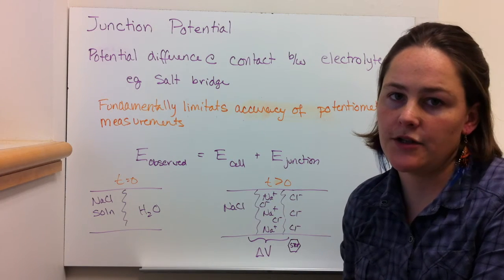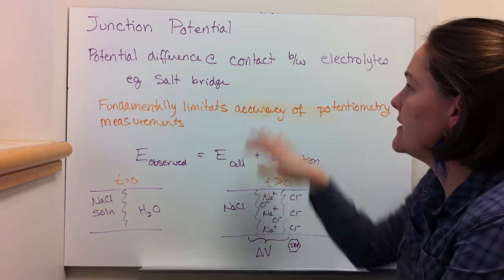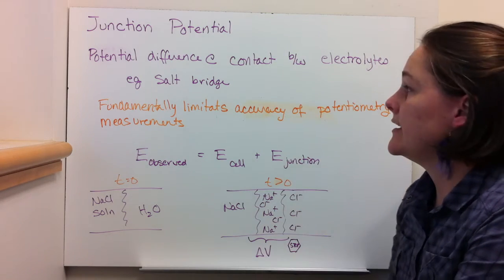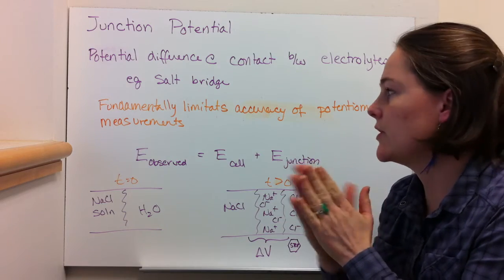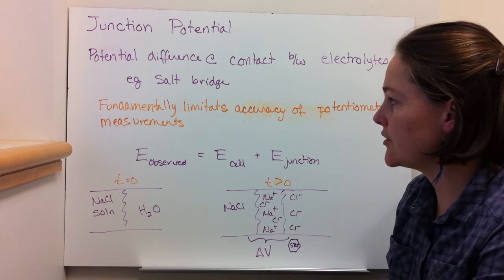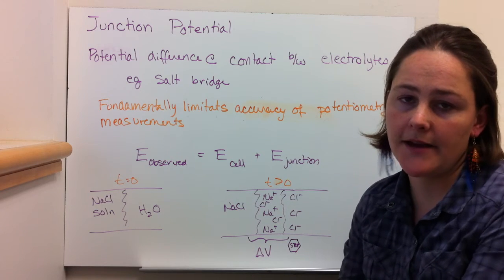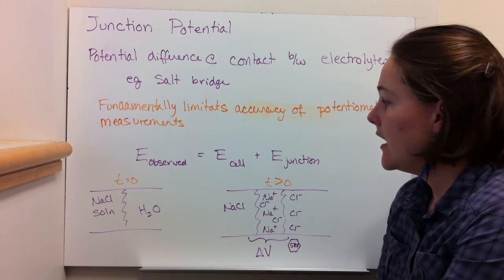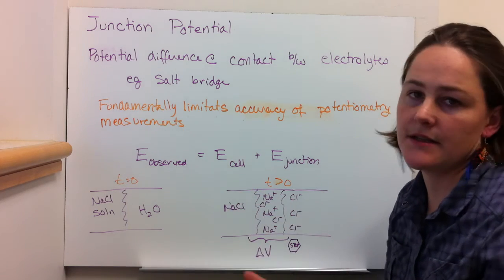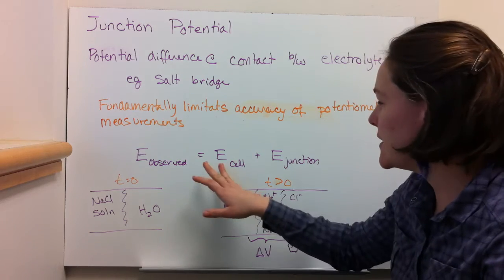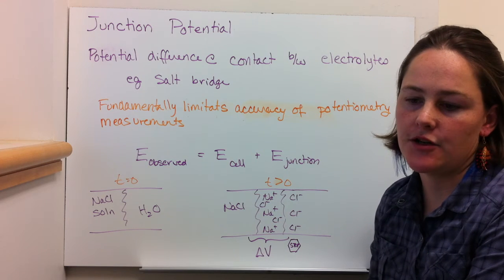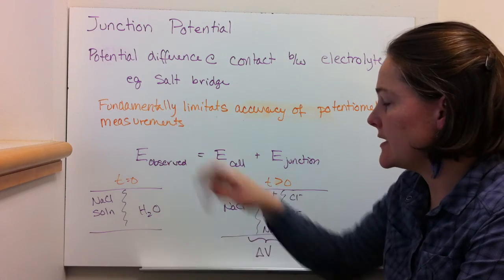The last thing I wanted to talk a little bit about is a junction potential. This is a potential difference that is generated when you have two electrolytes in contact, something like a salt bridge where you have two electrolytes in contact. Across each side of the salt bridge you can have one of these junction potentials. And this is what actually fundamentally limits the accuracy of potentiometric measurements. Because E observed, what you measure on your meter, is equal to the E of the cell plus the junction potential. And you can't often measure the junction potential, so you don't really know what it is. And that's why it's fundamentally limiting the accuracy.